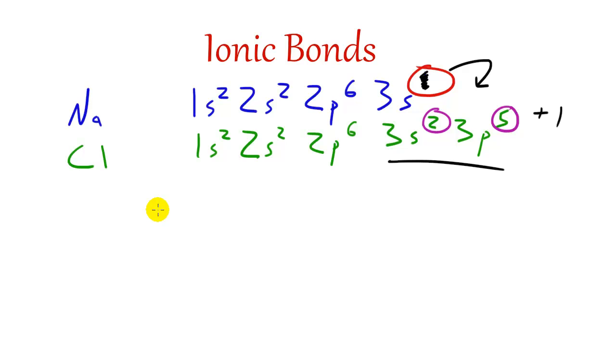So what happens again is, sodium loses 1 electron, and it becomes a positively charged ion, and remember, we call positively charged ions cations, and we're going to write it just like this. Na with a plus as a superscript.